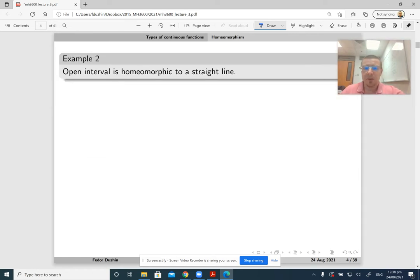Now, let us look at some examples. An open interval is homeomorphic to a straight line. We already saw this example in lecture 1, but let me do it one more time. For example, the function tangent x, its domain is the interval from negative pi over 2 to pi over 2, and its range is the whole real line. So it is an explicit homeomorphism from the interval to the real line.